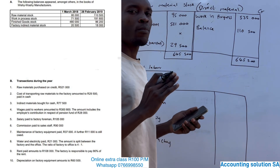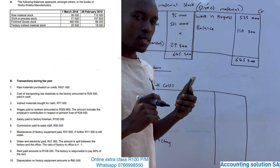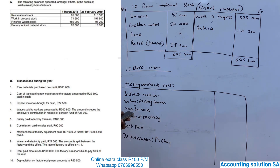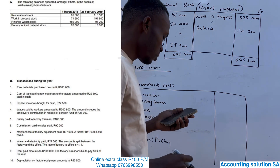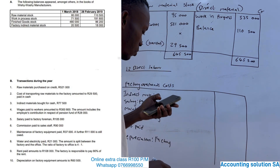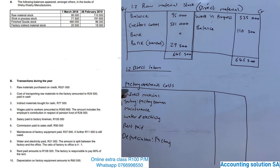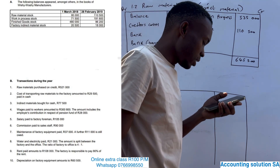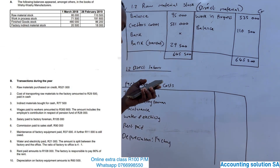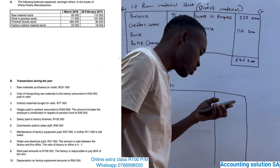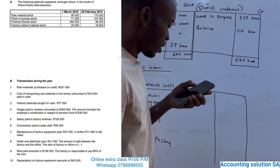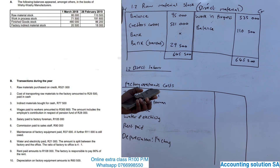No heavy work is needed — just simple steps and you're done. Moving to the next one: we are going to calculate direct labor. Transaction number four — wages paid to workers amounted to 300,800, and they say the amount includes the employer's contribution in respect of pension fund of 28,000.